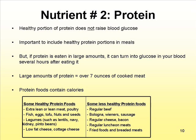Some less healthy protein foods include regular beef, bologna, wieners, sausages, regular cheese, bacon, regular lunch meats, fried foods, and breaded meats. It's important to remember that a healthy portion of protein does not raise your blood glucose.